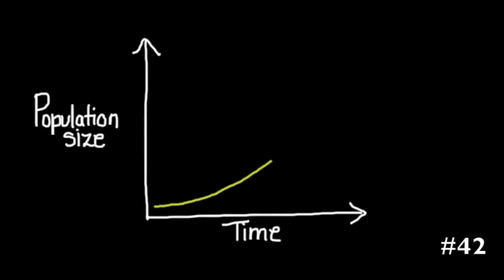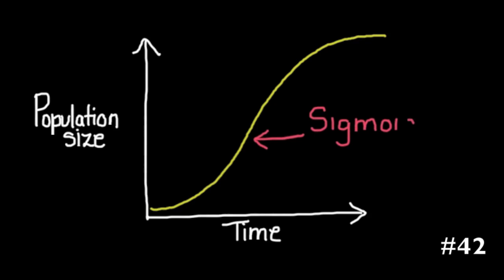In the ecology unit, under the section populations, you're asked to draw and label a sigmoid growth curve. Students give all sorts of strange curves for this, but you get no marks whatsoever unless it's actually a sigmoid curve. The best way to go about doing this is to make sure that you practice it as a draw and label objective.